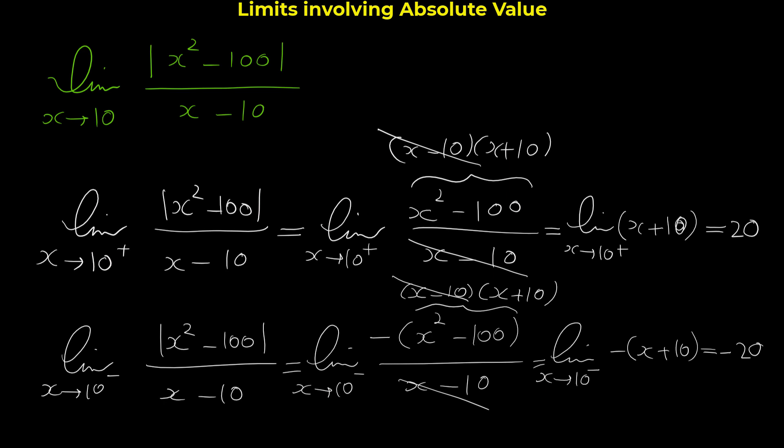So the right-hand limit is 20 and the left-hand limit is -20. Since the left and right limits are different, the original two-sided limit does not exist. I hope by watching this video you have learned how to find limits involving absolute value.